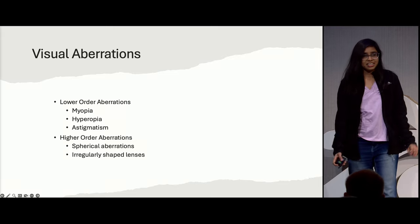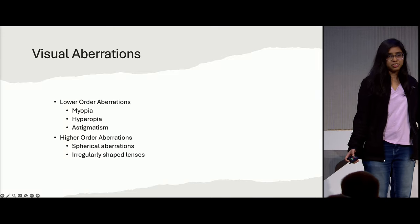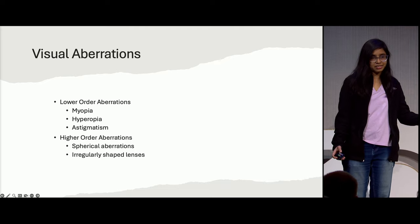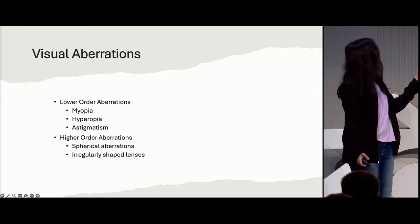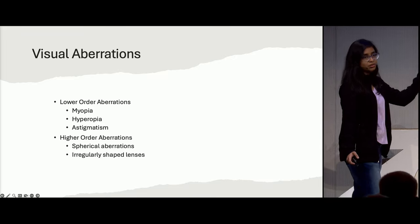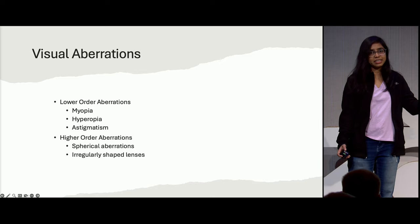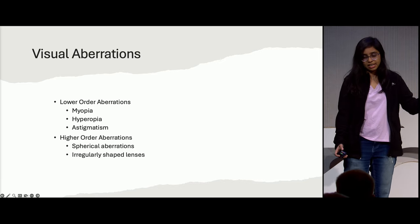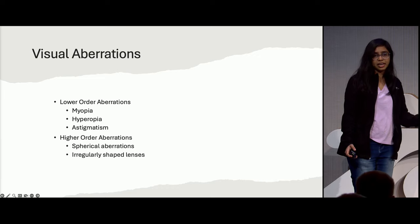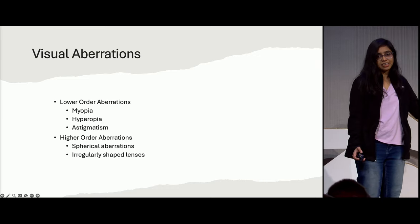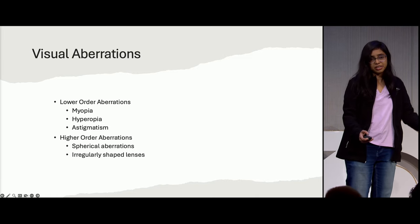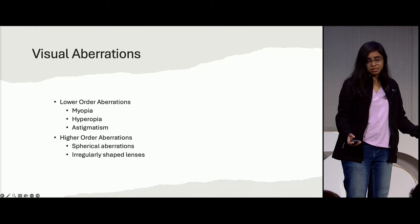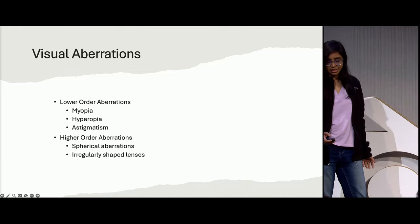All of you must be aware of visual impairments. They can be categorized into two different categories: lower order and higher order. Lower order includes nearsightedness, farsightedness — like myopia, hyperopia, astigmatism — and higher order includes spherical aberrations and irregular shaped lenses. All of these are rectified using different correction mechanisms.